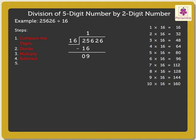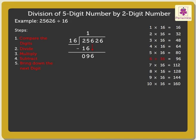The next step is to bring down the next digit, that is, six. After bringing down the digit, we again compare ninety-six and sixteen. Ninety-six is greater than sixteen, so we can divide ninety-six by sixteen. As we know, sixteen into six is equal to ninety-six. Write six in the quotient and subtract ninety-six from ninety-six to get zero.